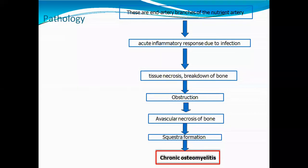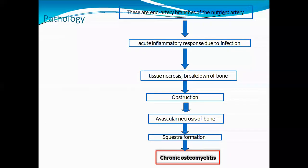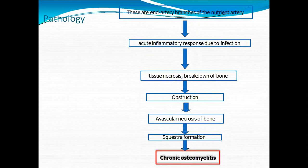Recall that the end artery brings up the nutritional supply to the metaphysis. The inflammatory response due to infection is first acute and then becomes chronic. The necrosis causes breakdown of the bone — the bone becomes porous, necrosis breaks it down, obstructions are created, and avascular necrosis of the bone results in reduced permeability.